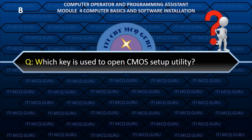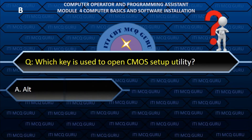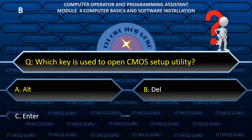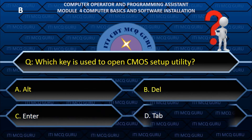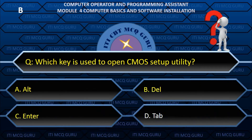Which key is used to open CMOS setup utility? — B. Delete.